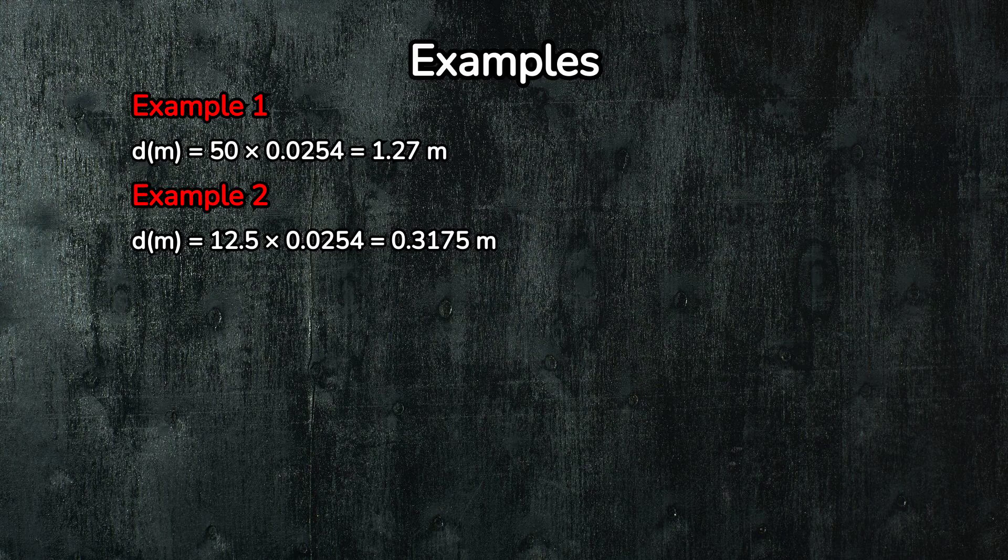Example 2: But what if you need to convert a fraction of an inch? Let's say you have something that's 12.5 inches long. Using the same formula, we multiply 12.5 by 0.0254 and we get 12.5 inches times 0.0254 equals 0.3175 meters.